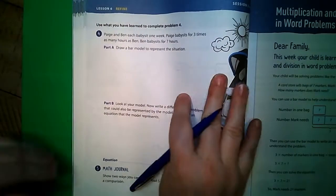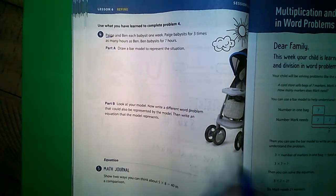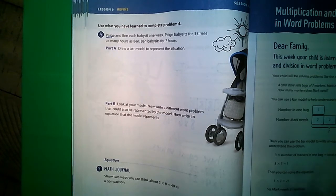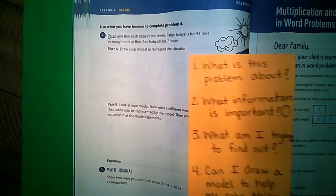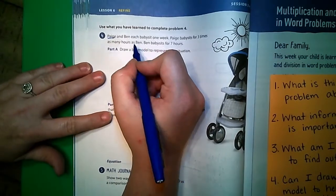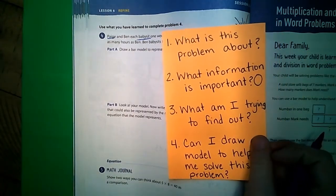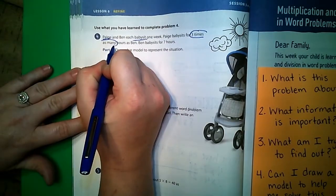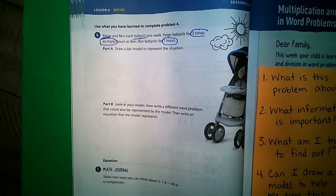Alright, page 118. Page and Ben each babysit one week. Page babysits for three times as many hours as Ben. Ben babysits for seven hours. So using this right here, what is this problem about? It's about Page and Ben babysitting. What information is important? Three times as many is important, and then Ben babysits for seven hours is also important.